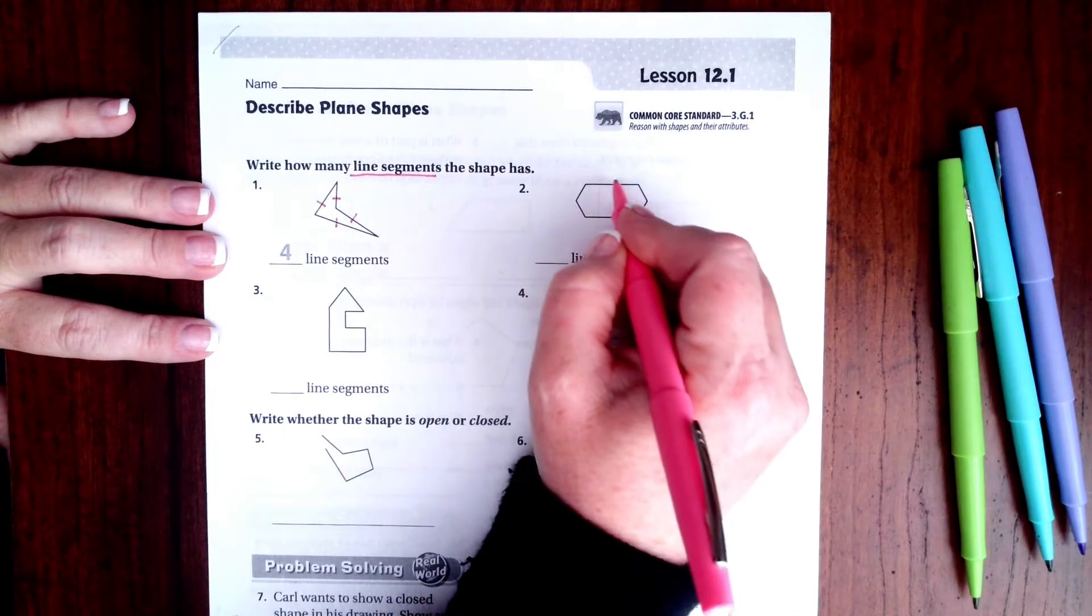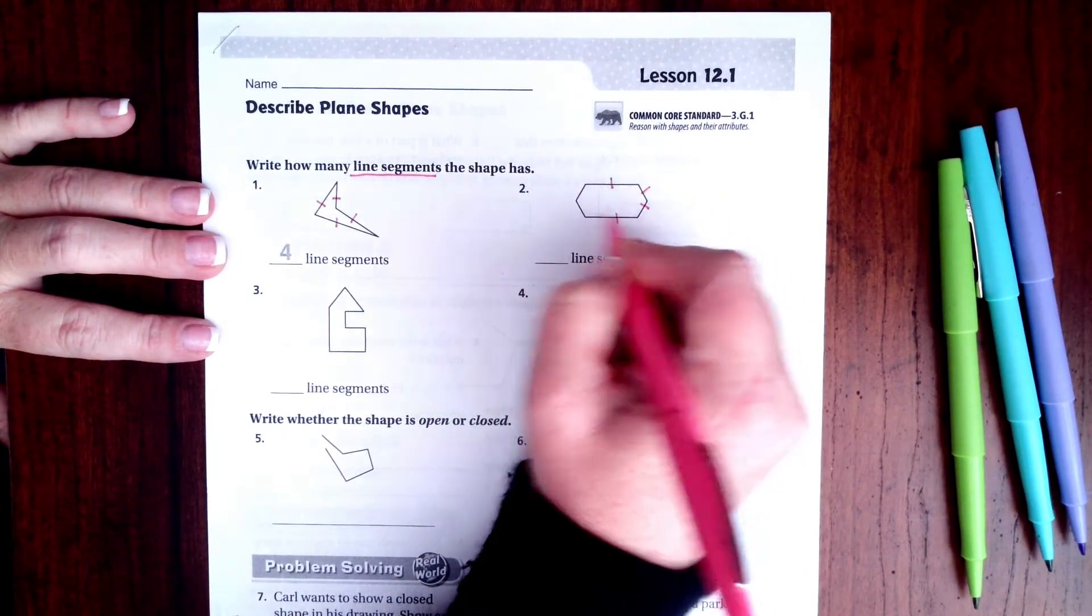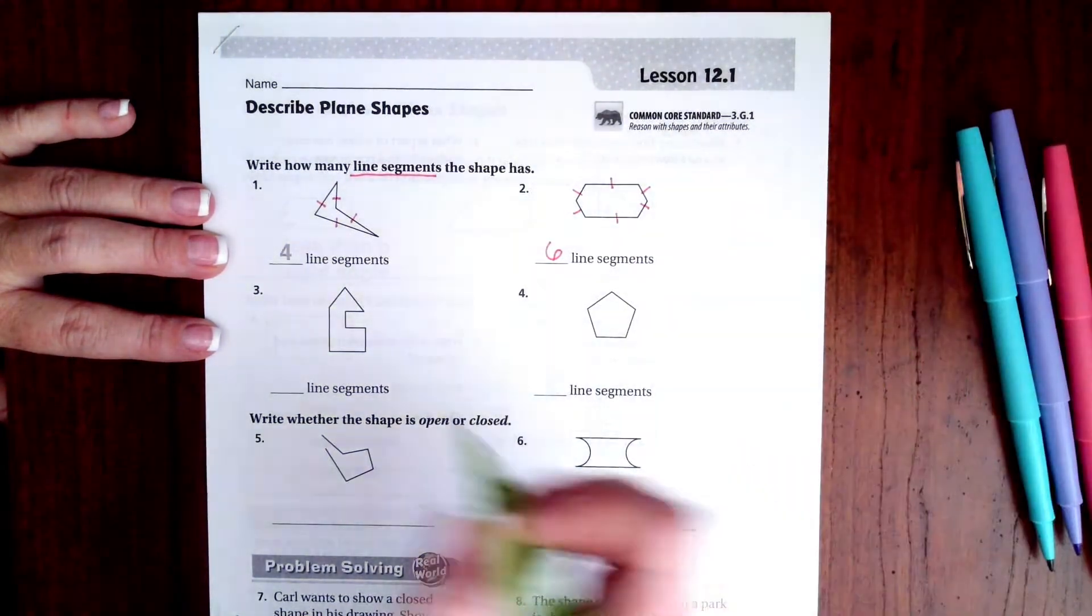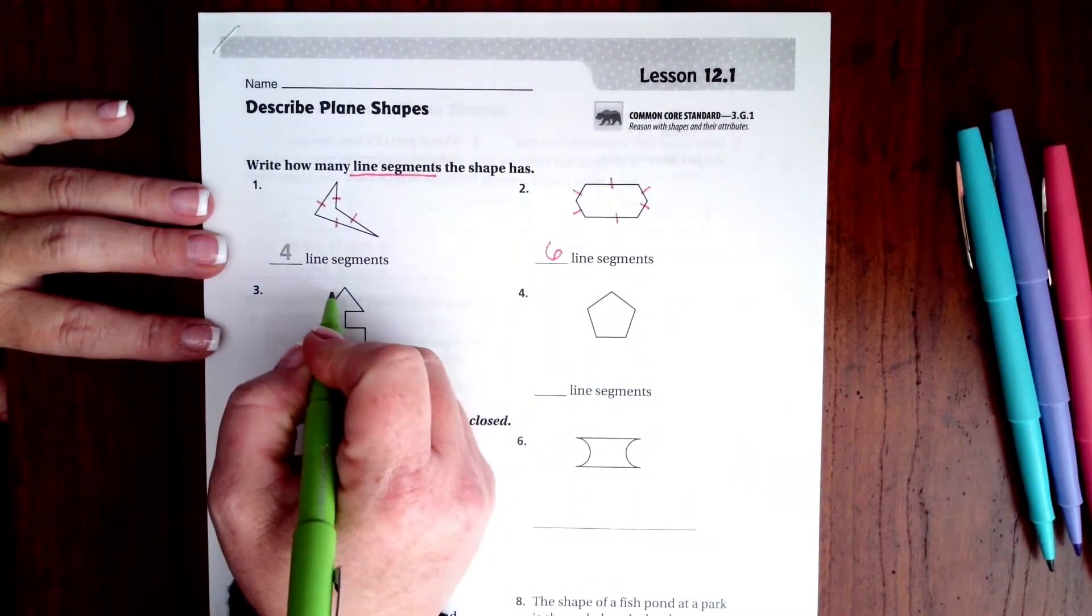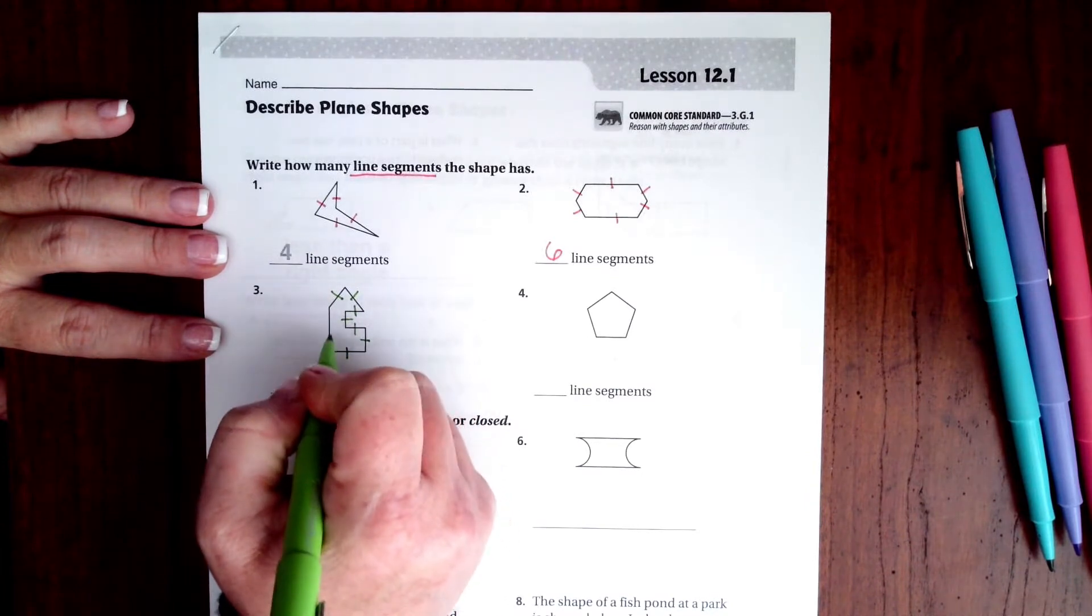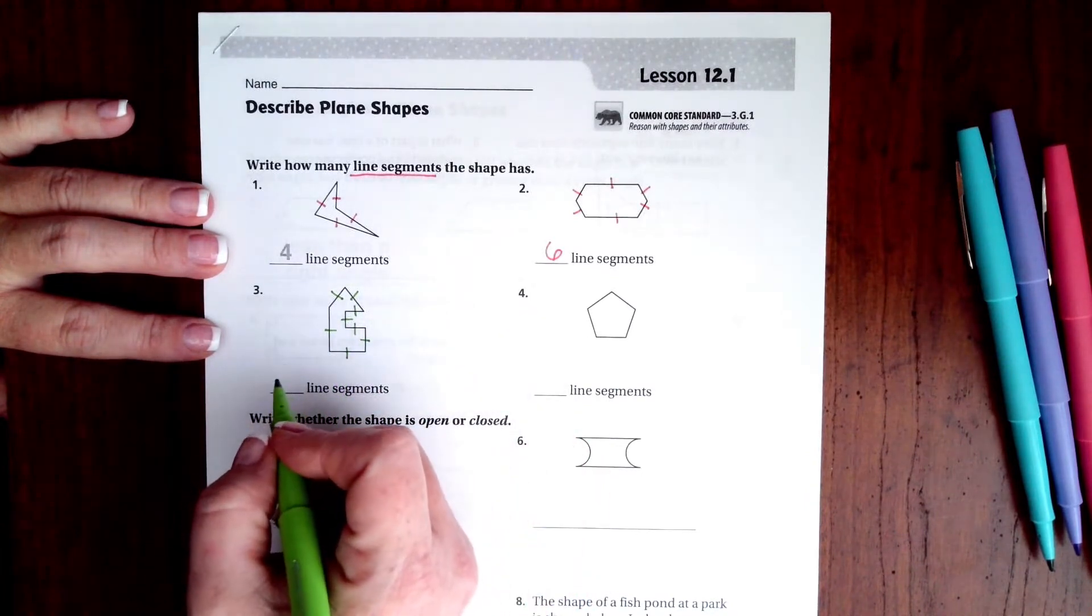On this one we have one, two, three, four, five, six. That's all that means. Even when they're funky shaped, it's just the sides. So one, two, three, four, five, six, seven, and eight.